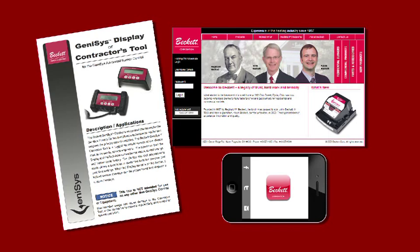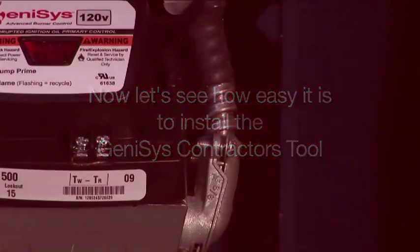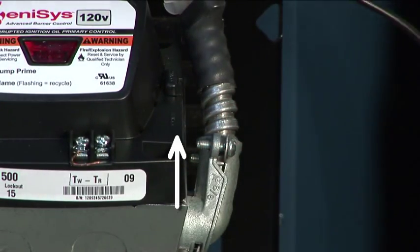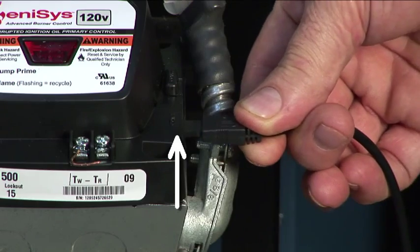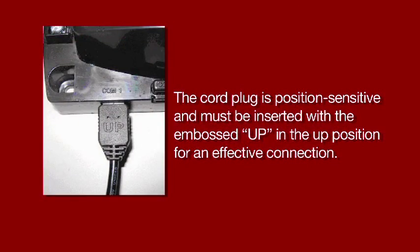Now let's see how easy it is to install the Genesis Contractors tool. To install the Contractor tool, plug the connector from the interface cord into the COM1 port. The cord plug is position sensitive and must be inserted with the embossed UP in the UP position for an effective connection.